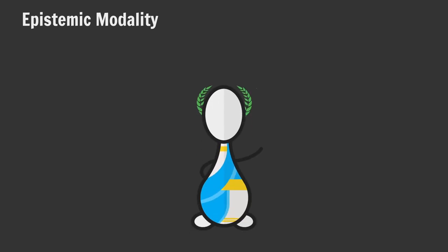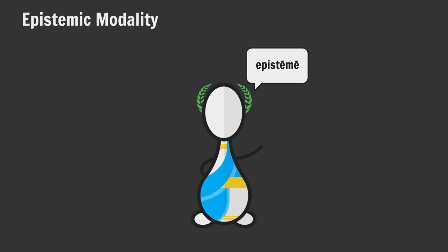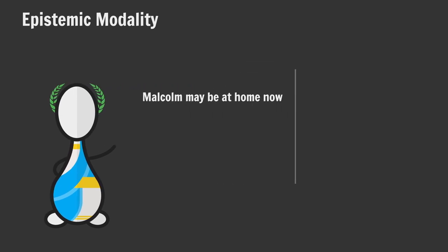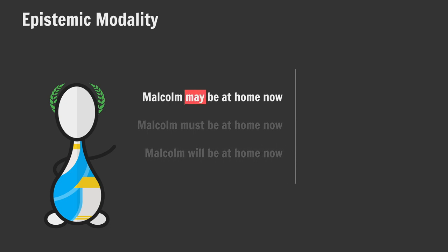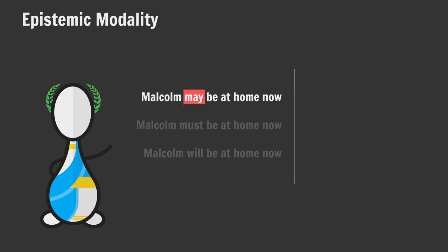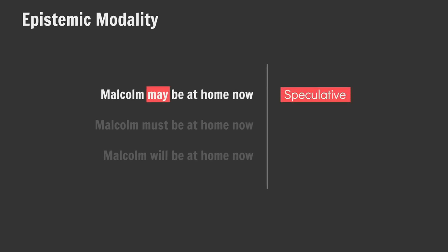Epistemic modality, from the Greek for knowledge, deals with the judgment speakers make based on what they know or believe. Compare: 'Malcolm may be at home now,' 'Malcolm must be at home now,' and 'Malcolm will be at home now.' 'Malcolm may be at home now' is an example of speculative modality. From the speaker's point of view, Malcolm may or may not be at home — they are unsure, speculating. Speculative modality is frequently used to express uncertainty.